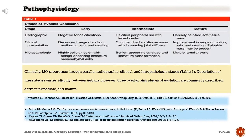Clinically, myositis ossificans progresses through parallel radiographic, clinical, and histopathologic stages. Three overlapping stages of evolution are commonly described: early, intermediate, and mature.